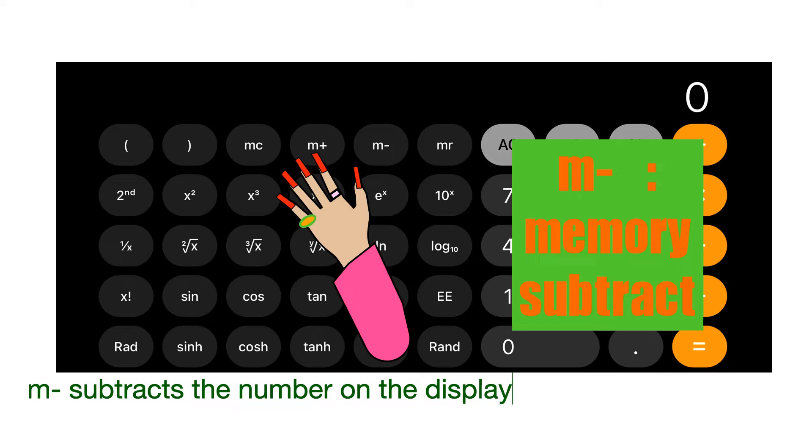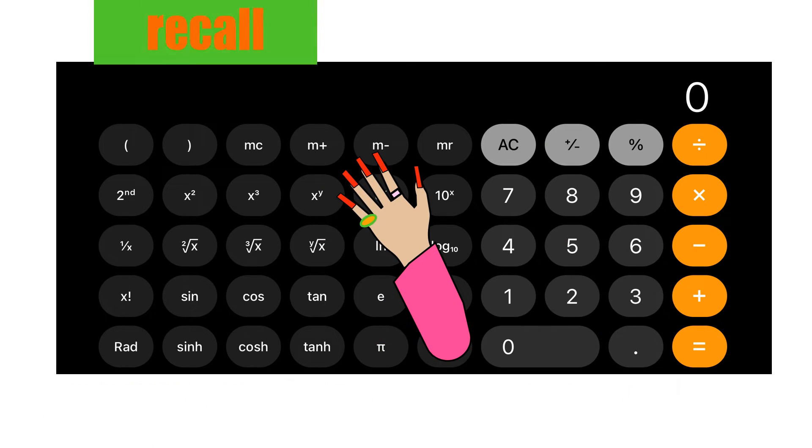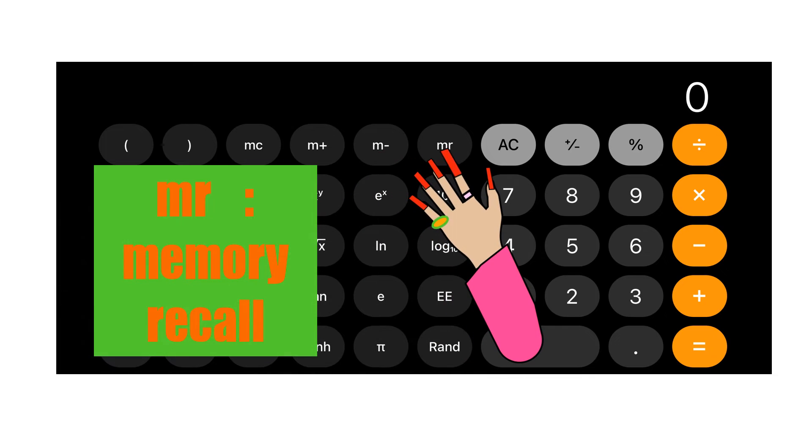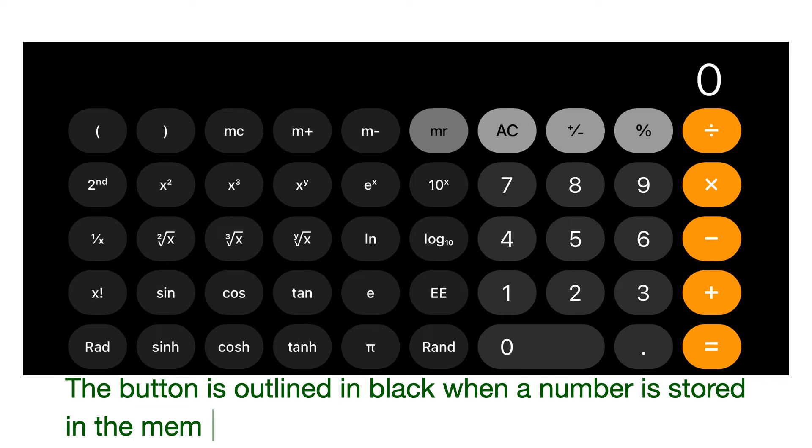M minus subtracts the number on the display from the number in memory. MR, memory recall, recalls the number from the memory to the display. The button is outlined in black when a number is stored in the memory.